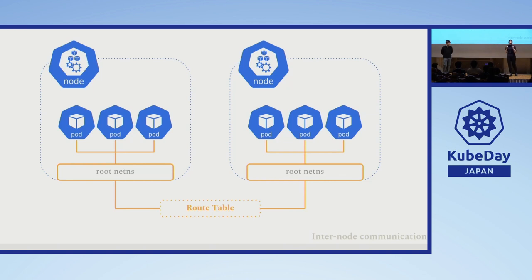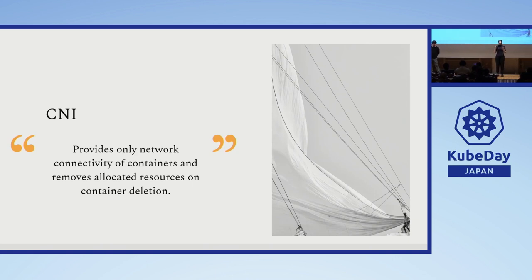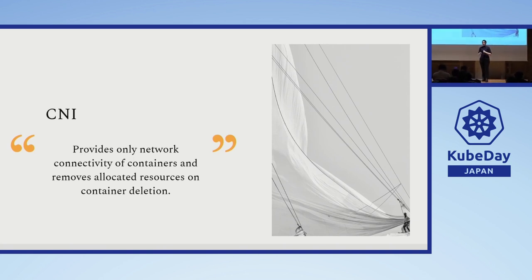The networking topology dictates that every single pod should be reachable via its IP. As such, we needed inclusivity for different networking systems. This is where the CNI, or container network interface, was introduced. It introduces the network overlay for a cluster and has two operations: addition and deletion. It will make sure to allocate an IP to a pod when it's created, and it will ensure to remove any resources when the pod is no longer there.